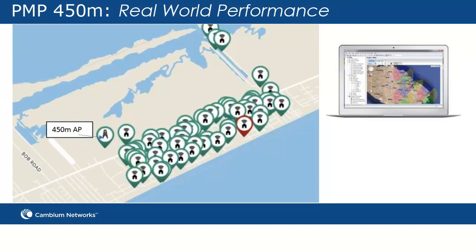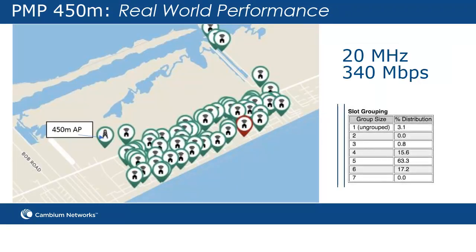You can also use Link Planner to get an idea of how the sector will perform. For example, in this deployment in the 20 MHz channel, you can see the system is getting a 340 Mbps link test with great grouping. In another deployment, we saw a group size of 5 on average in the link test with 270 Mbps in a 20 MHz channel.